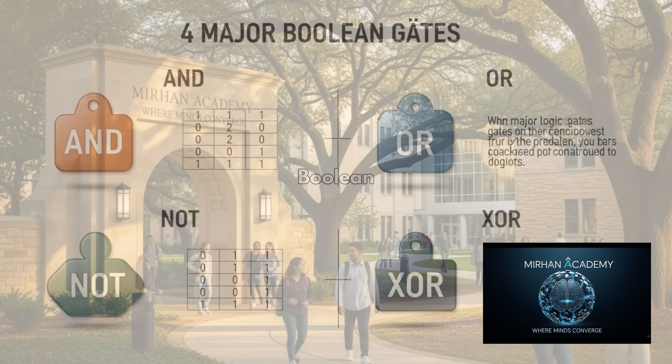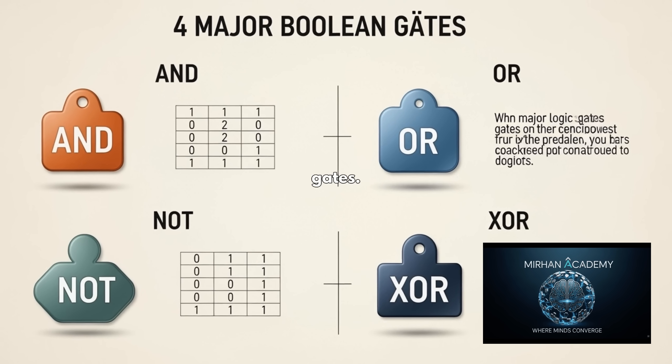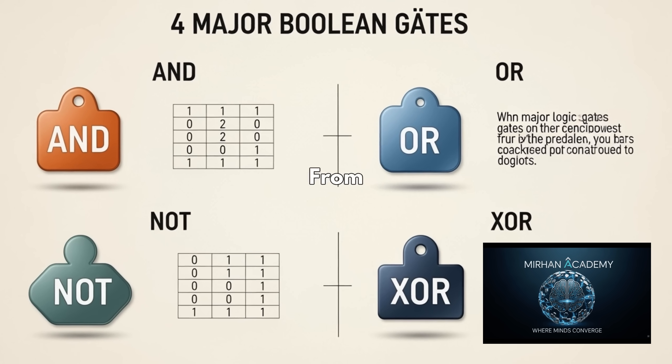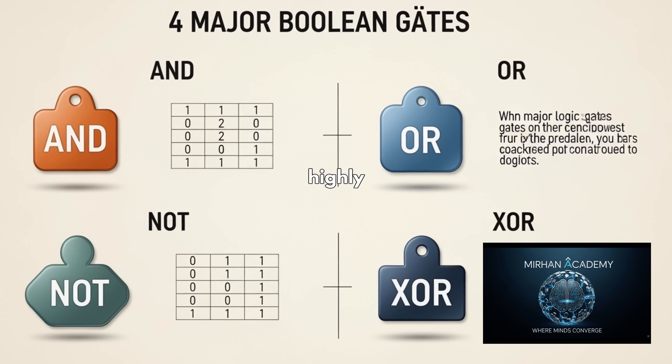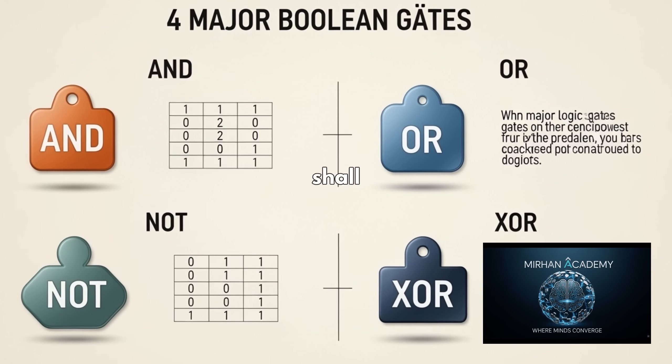The Boolean Gates consist of four major gates. From an abstract yet highly practical overview, these shall be explained in very simple and understandable terms.